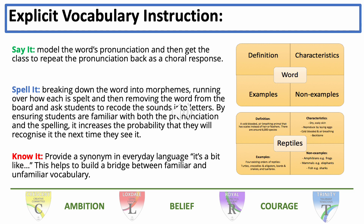Students are required to know a wide range of subject-specific vocabulary. To support students with their acquisition of this vocabulary, staff will follow the say it, spell it, know it approach. Students are encouraged to say the word aloud. They're encouraged to break the word into morphemes so that they are able to spell it and remember it next time. And so that they know it, understand it, and can use it in context, we support them with thinking of synonyms — words that have a similar meaning to the new word. This is an approach that can absolutely be used at home.